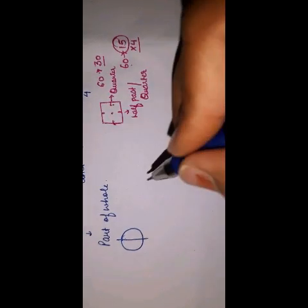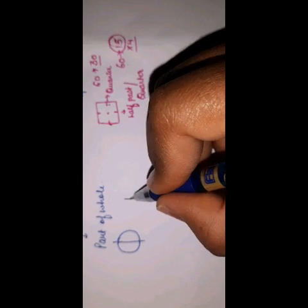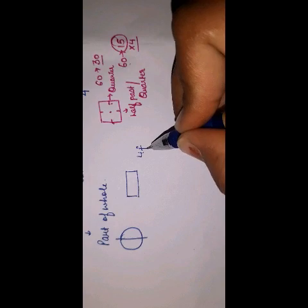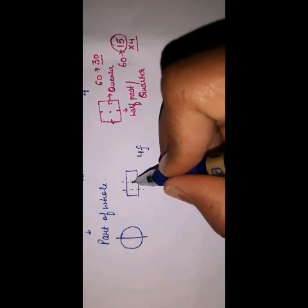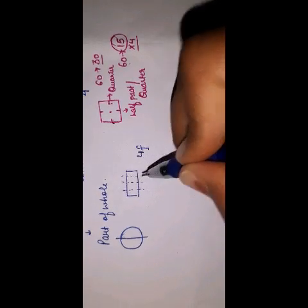Suppose kijiye ki aapke paas ek chocolate bar hai, aur aap four friends hain. Toh agar aap four friends hain, toh yeh chocolate aap kis tarah share karenge? You have to divide this chocolate into four parts. Toh jab haam whole ko different parts mein todte hain, toh woh hamaari fraction kehlati hai.